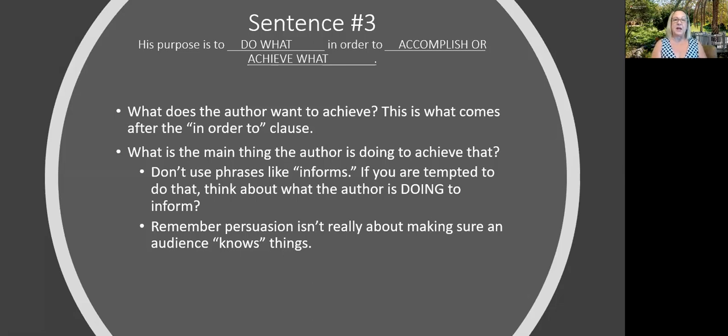Sentence number three is about a key thing the author is doing in order to achieve some response for the audience. And so you want to think, what does the author want to achieve? How does the author want the audience to respond? This is what comes after the in order to clause. And then what is the main thing the author is doing to achieve that? Don't use verbs like informs. If you're tempted to do that, think about what the author is doing to inform. And remember that persuasion isn't really about making sure an audience knows things. It's about making sure an audience responds in some important way.